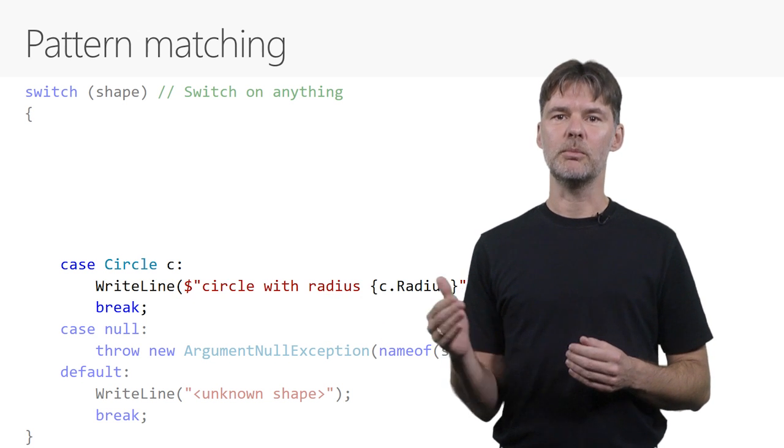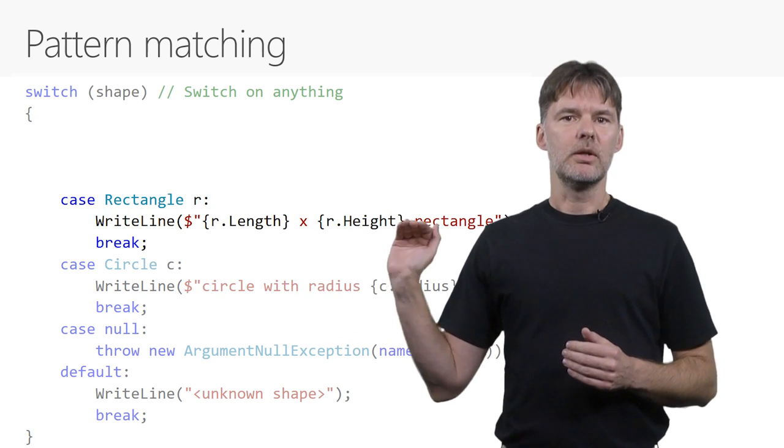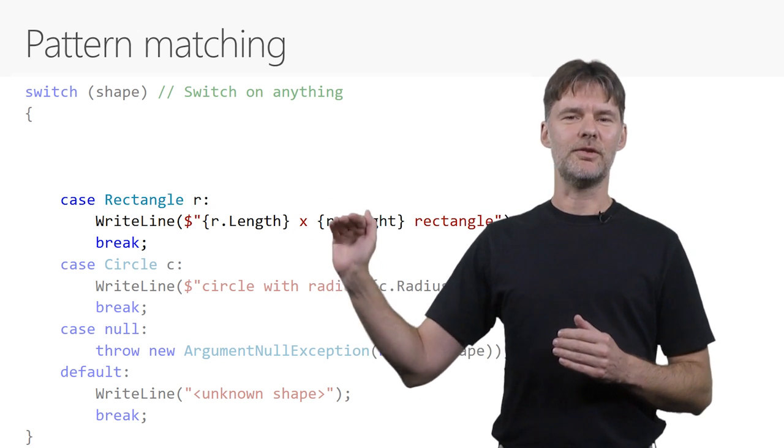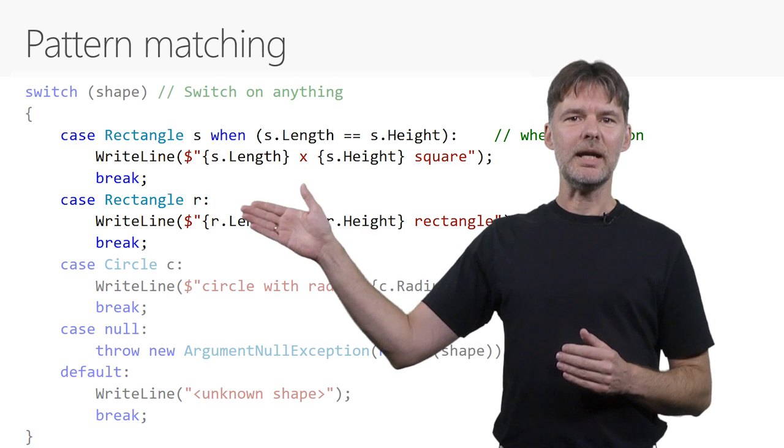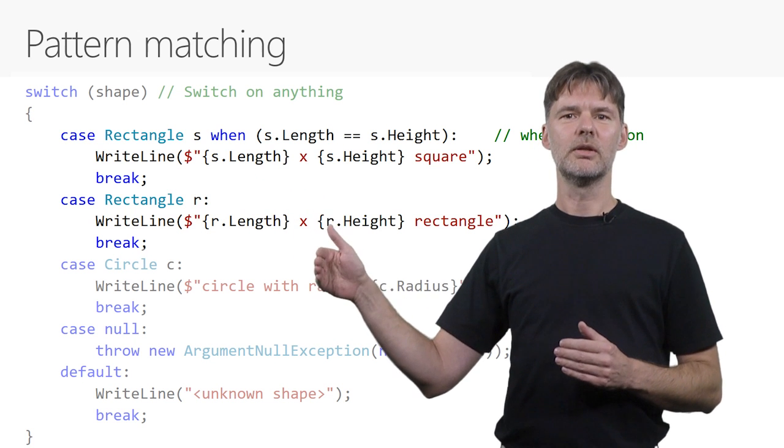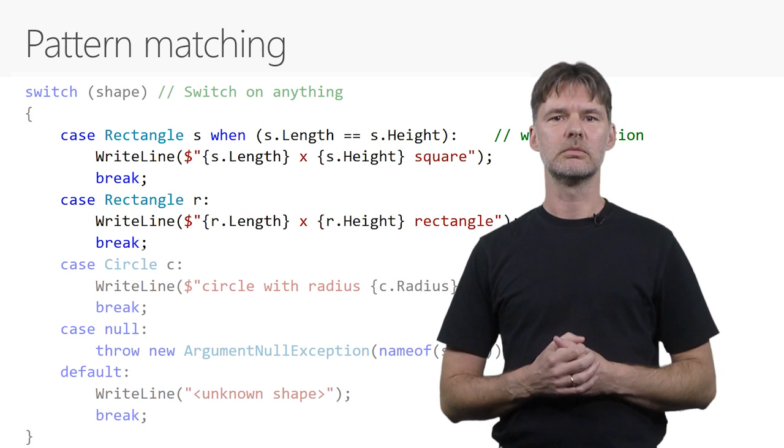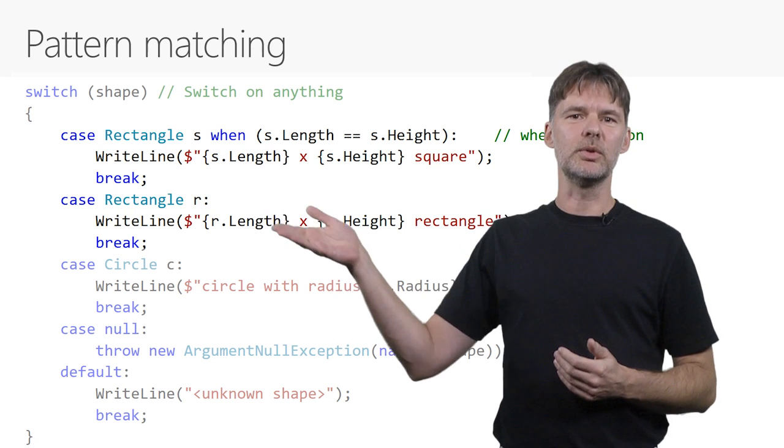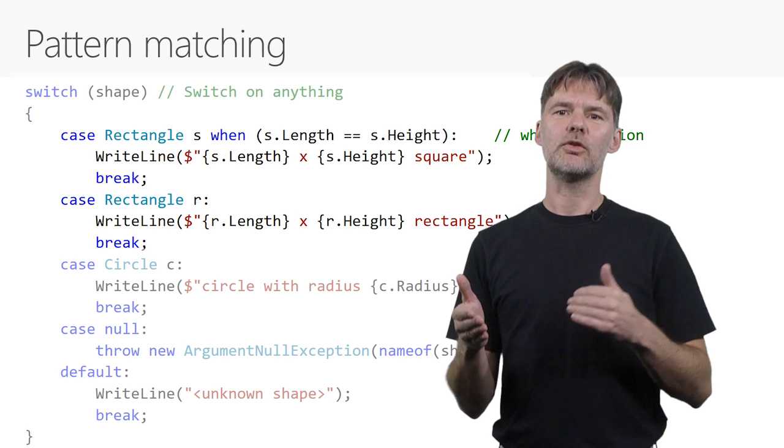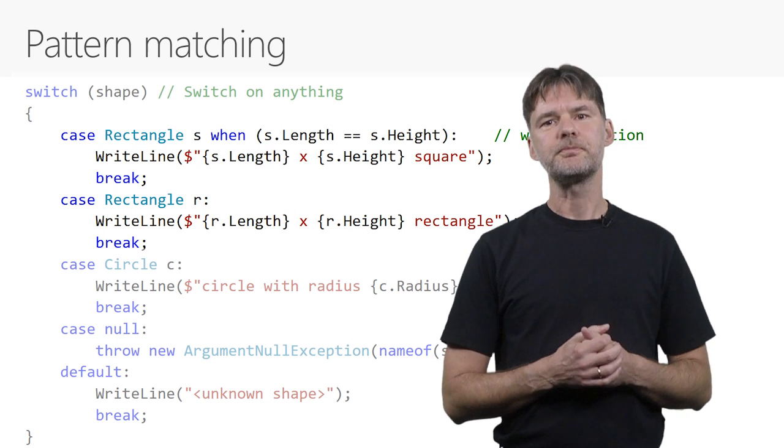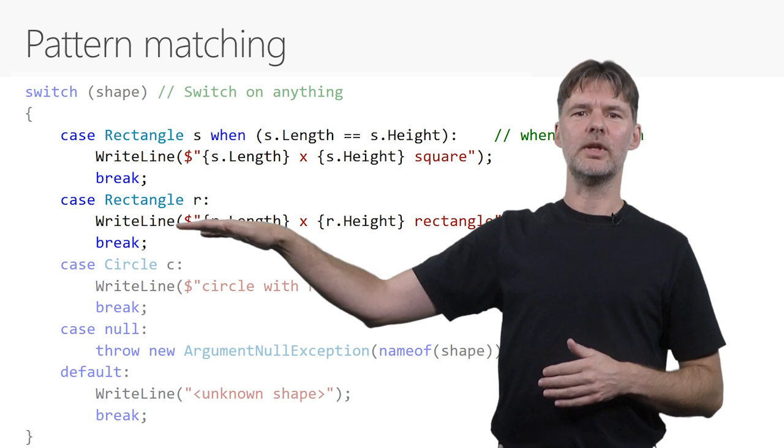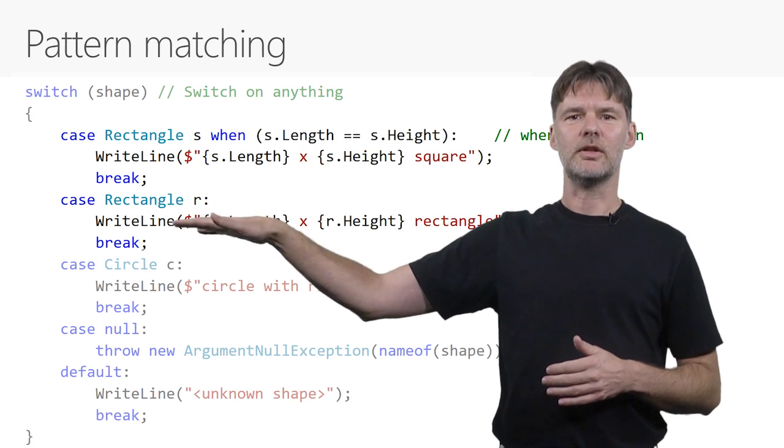Now we can do the same with rectangles, but we want to also add a special case for squares, which don't have their own type in this example, but are simply rectangles with equal sides. So here, the case clause has a when condition, further filtering the input that it triggers on. The when condition is just any Boolean expression, which is similar to the exception filters that we added in C# 6.0 to catch clauses. And similar to those, if you don't fulfill the extra conditions, you just fall through to the next case, the next rectangle case in this example.